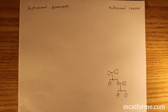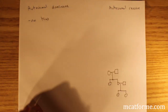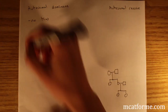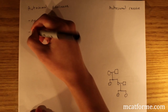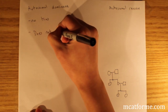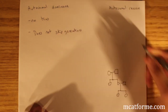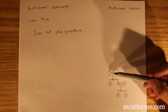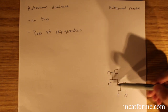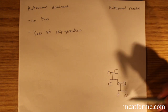In autosomal dominant, we have no bias. Males and females will both have an equal chance of getting the disease, and it does not skip generations. So that means if the grandmother has it, the kids will have to have it, and then those kids will have to have it.